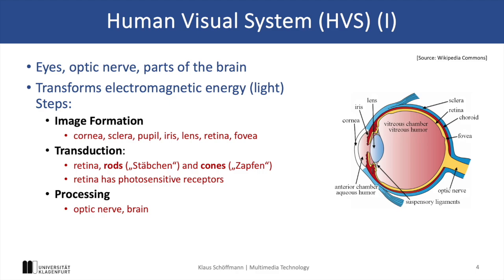First, there is image formation, where the light passes through the cornea, the pupil, the lens, and then gets focused on the retina at the back of the eye. The fovea is a small area within the retina which is responsible for our sharpest vision.